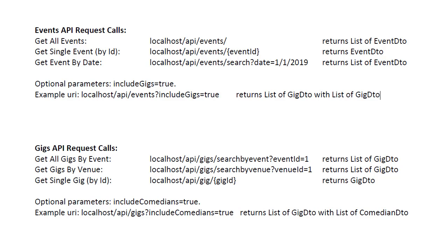We will allow several GET requests. For our events, we will allow getting all events as well as a single event by ID. Additionally, we will allow searching events by date — the user will specify a search query inside the URI and we will return the specific events for that date. We will also allow additional optional parameters in the URI that will include all gigs if set to true, in which case we will return all the events as well as all the gigs that belong to each event.